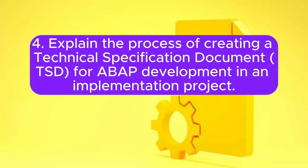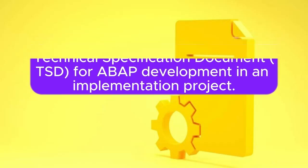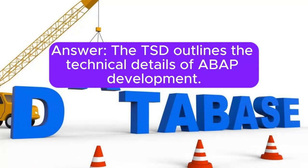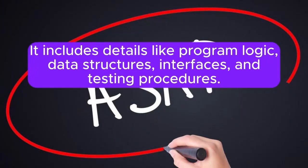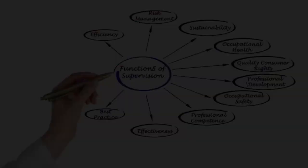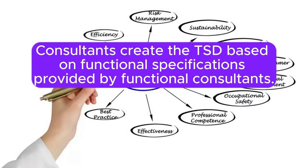Question 4: Explain the process of creating a Technical Specification Document (TSD) for ABAP development in an implementation project. Answer: The TSD outlines the technical details of ABAP development. It includes details like program logic, data structures, interfaces, and testing procedures. Consultants create the TSD based on functional specifications provided by functional consultants.